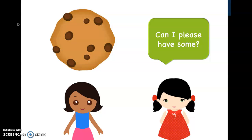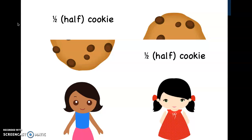Alright, good job brainstorming. So there are several ways that we can go about it. She can always break the cookie in a different part and give some of that cookie, but what do you guys think Katie can do to make it fair for both of them to have the same amount? If you guys said to cut it in half — awesome job. That is what Katie did exactly.